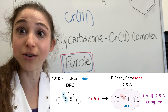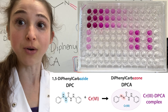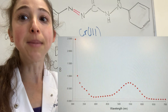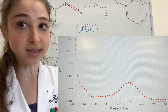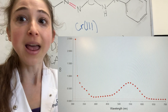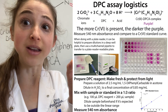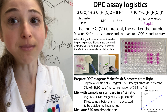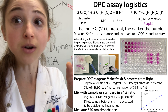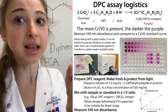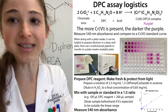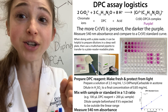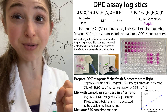You can measure how purple it is, which corresponds to how much chromium-6 there was, by measuring the absorbance at 540 nanometers. You can compare that to a standard curve made with known concentrations of chromium-6 mixed with DPC. In this way, you're able to determine the concentration of chromium-6 present.